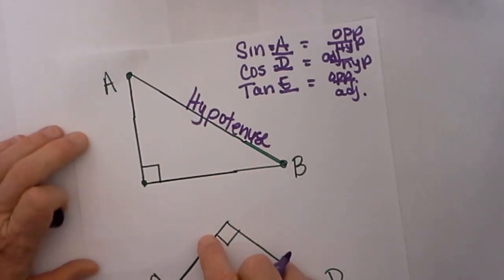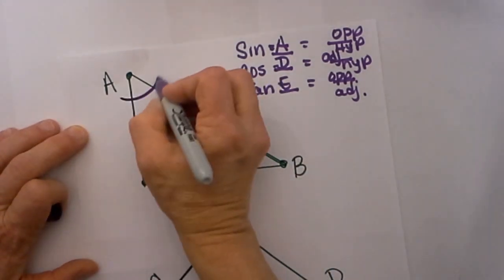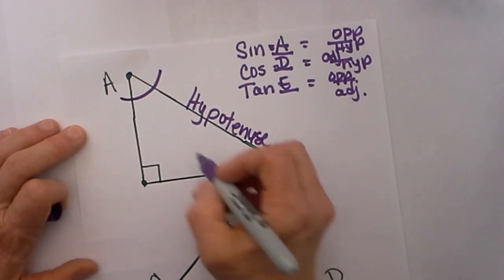So it changes based on where you are. So what I always do is since we are looking from angle A, I mark the angle.